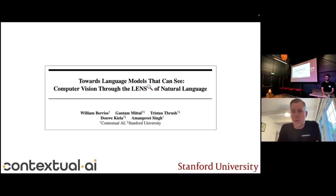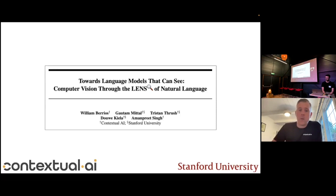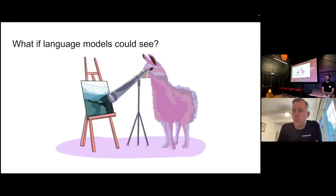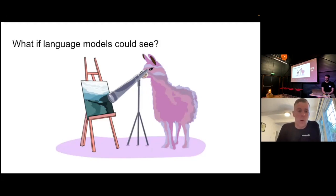This is a fun research paper we did with our team called Lens, where we are trying to make language models see. The starting point is really just the idea of: okay, you have a language model — what would happen if you gave it a set of eyes? Can you then do more interesting things, and how good is that as a baseline compared to existing multimodal models?